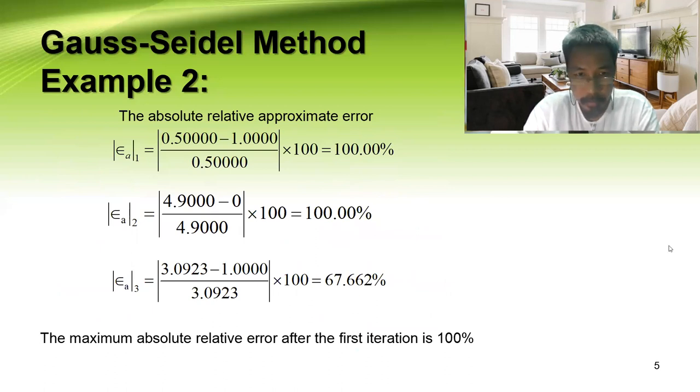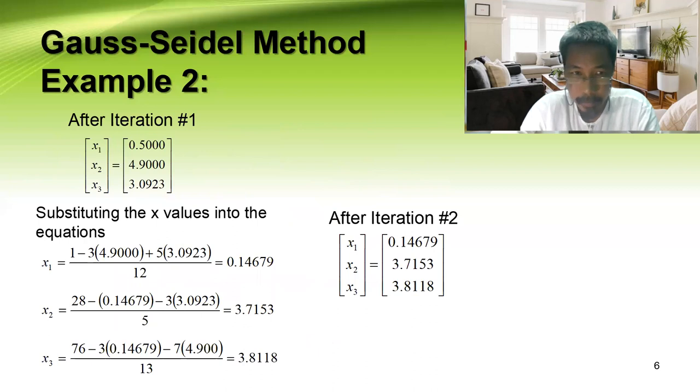The absolute relative error. The highest one is 100%, so 100% absolute relative error. We have the current minus previous divided by the current. The maximum relative error is 100%. Next iteration, we have now the updated value. Again, do the substitution. We have the following value after second iteration.